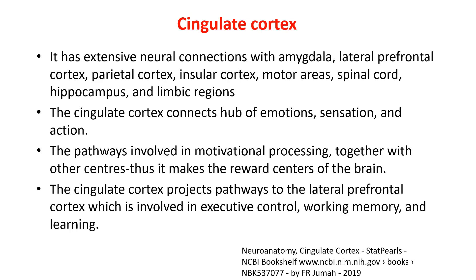Information from the medial dorsal nucleus of the thalamus goes to the cingulate cortex, forming part of the limbic cortex. The cingulate cortex has neural networking with the amygdala, lateral prefrontal cortex, parietal cortex, insular cortex, motor area, spinal cord, hippocampus, and caudate nucleus. It is a hub connecting emotions, sensation, and action. This pathway is involved in motivational processing, and together with nucleus accumbens and other centers, it forms the reward centers of the brain - determining whether a particular touch is rewarding or not.